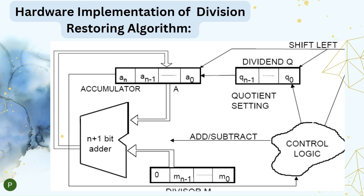The hardware implementation involves a combination of arithmetic logic units, registers, and control logic. We have three registers: M register, Q register, and A register. In Q register, we store the dividend; in M register, we store the divisor. A register is initially set to 0. The A register and M register are of N+1 bits, and we have an N+1 bit adder. The control logic manages signals to the registers for left shift, addition, and subtraction.